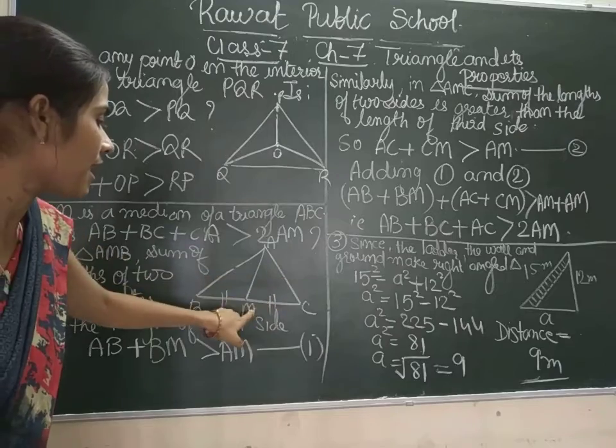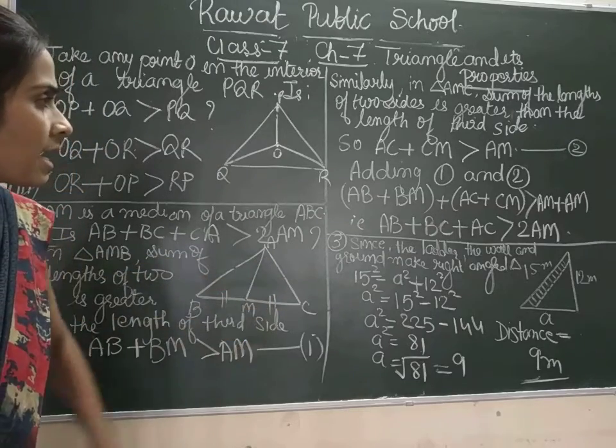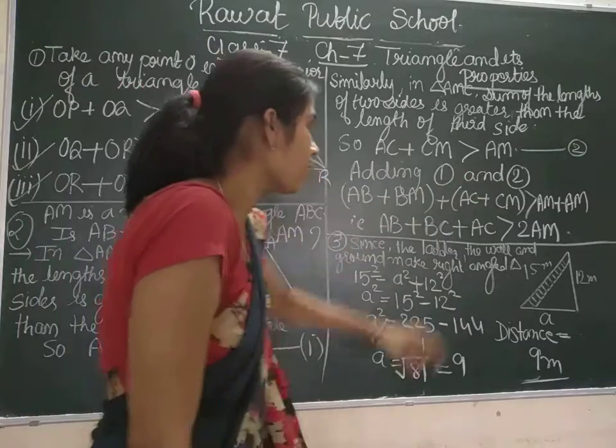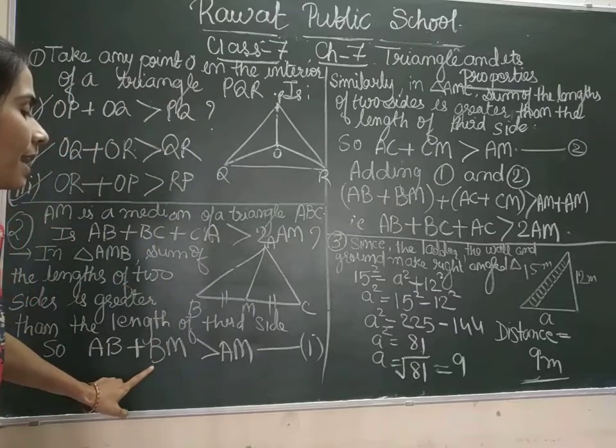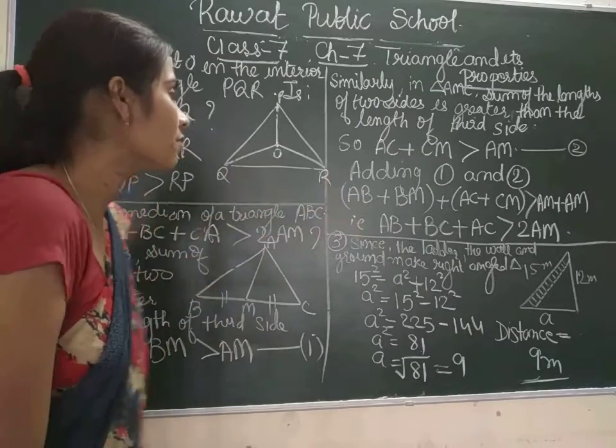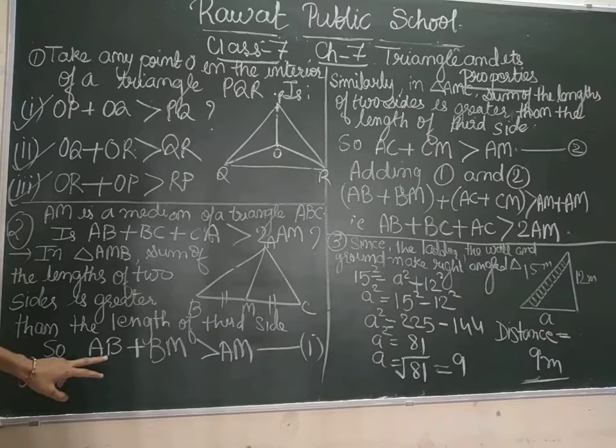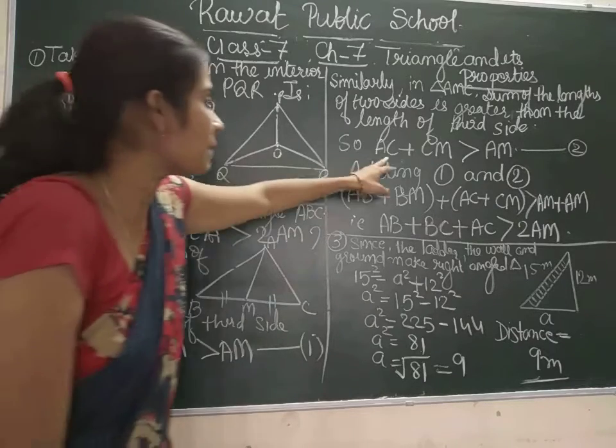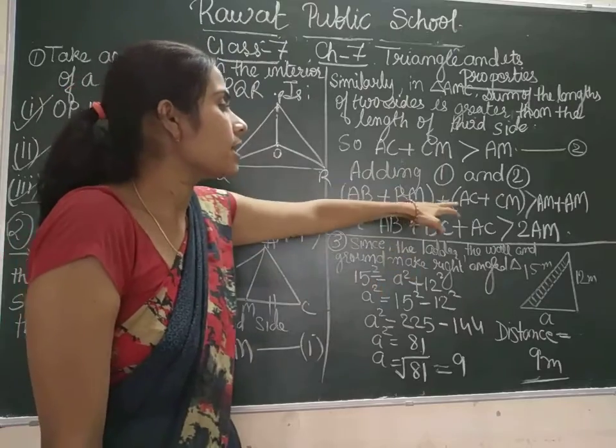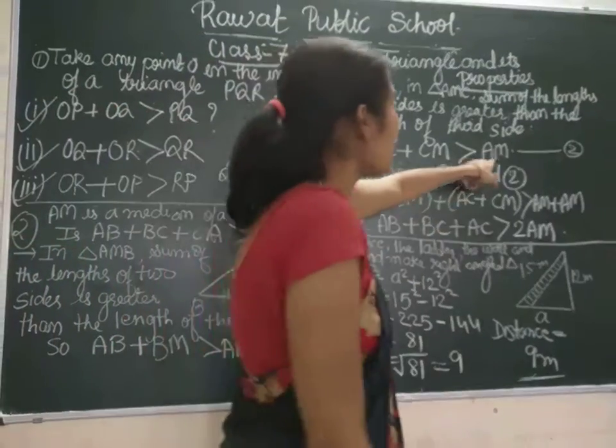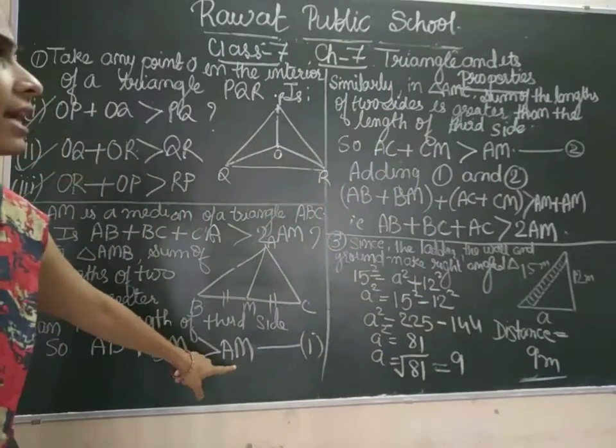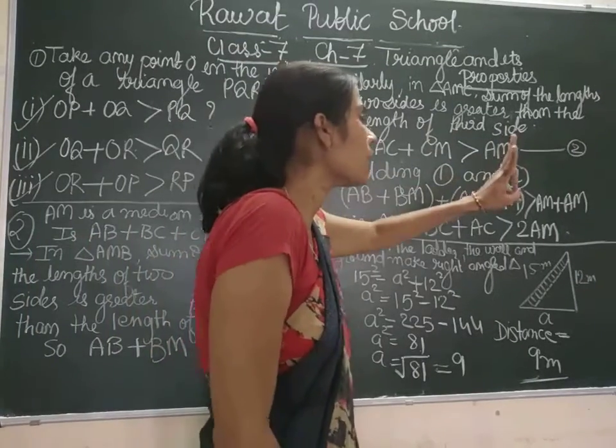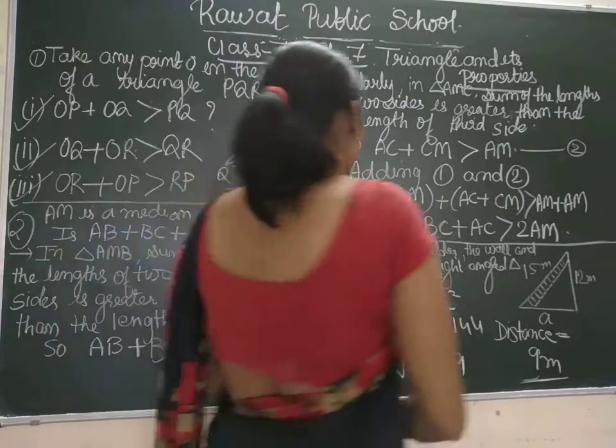In triangle AMC, sum of the length of two sides is greater than the length of the third side. So AC plus CM will be greater than AM. So this is the second equation. By adding first and second equation, we can get that AB plus BM plus AC plus CM is greater than 2AM. Because here also we are having AM, here also AM, so 2AM.